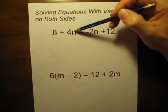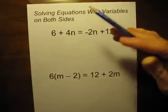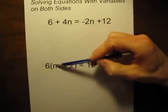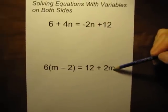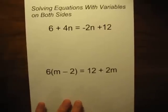So on the top one here, we have n on the left, n on the right. Down here we have m on the left, m on the right. So these are solving equations with variables on both sides.